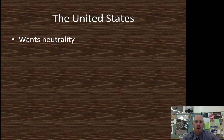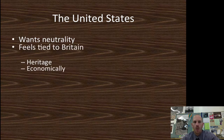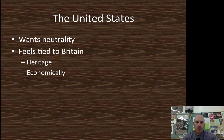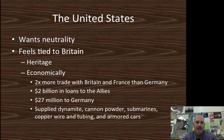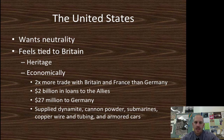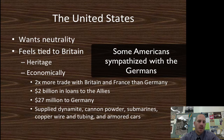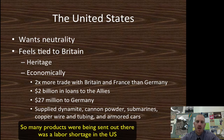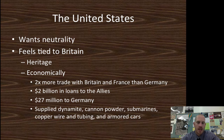The United States wanted neutrality — we didn't feel it was our war; it's a European conflict. However, we felt very tied to Britain because of our heritage, economic system, and government system. But being capitalists, we played both sides — we traded over two times more with Britain and France than with Germany, loaned the Allies approximately two billion dollars, and only about thirty million to the Germans. We supplied dynamite, cannon powder, submarines, copper wire, tubing, and armored cars, looking to make extra money while the war went on.